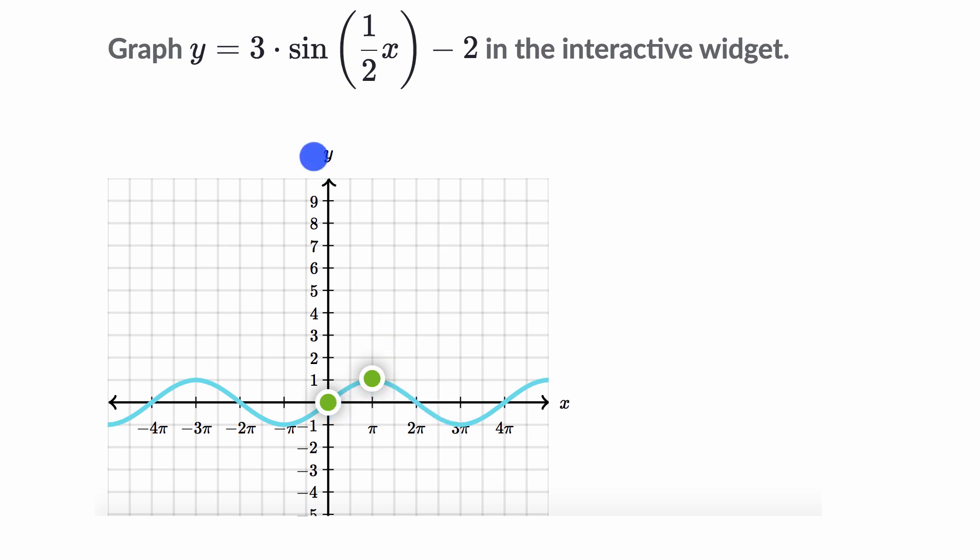Now what if we wanted to instead think about 3 times the graph of sine of 1/2 x, or 3 sine 1/2 x? Well then our amplitude is just going to be 3 times as much. And so instead of our maximum point being at 1, it will now be at 3.